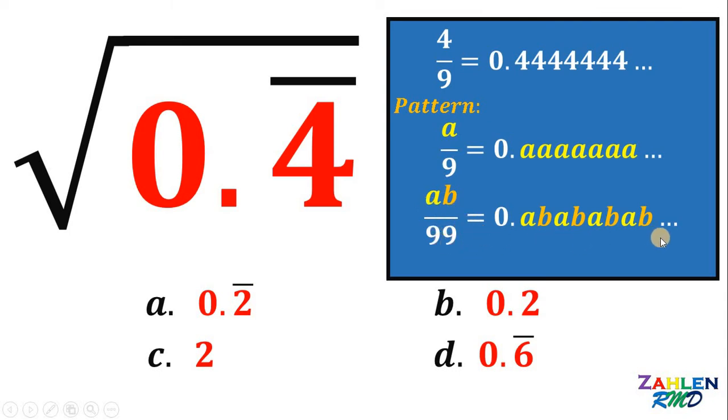And if we have three digits that is repeating, we have ABC all over 999. And it keeps going. Thus, 0.555555 can be written as 5 over 9, and 0.12121212 can be written as 12 all over 99. Of course, we can simplify this result, but our goal here is to find the pattern.